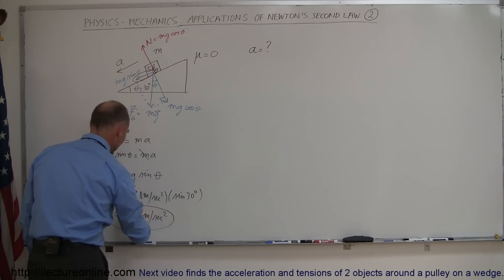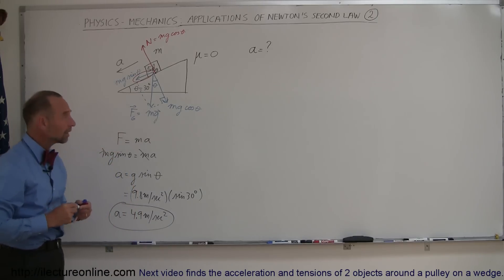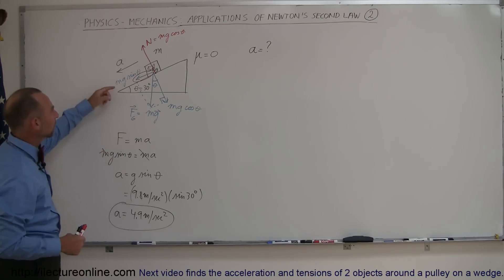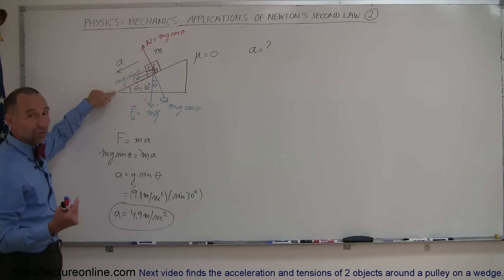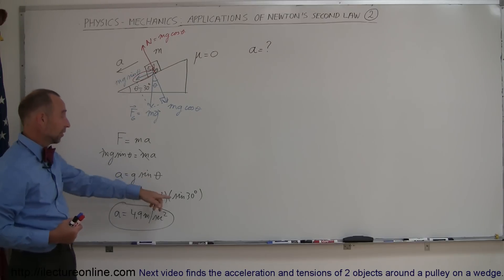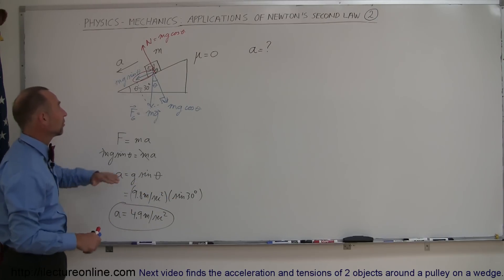Now, another interesting thing to look at is to look at limiting cases. In physics, it's always a good idea to look at limiting cases. What would the acceleration be when the angle goes to 0? Of course, when the angle goes to 0, then there would not be any incline. We expect mg sine theta to go to 0 as well. And sure enough, the sine of 0 degrees is 0, so there would be no acceleration.